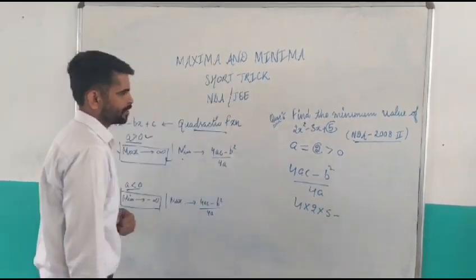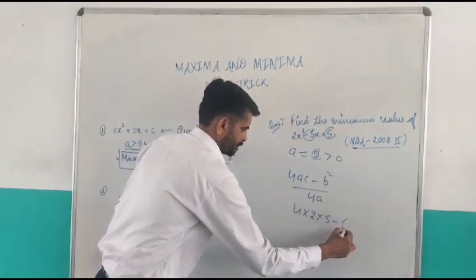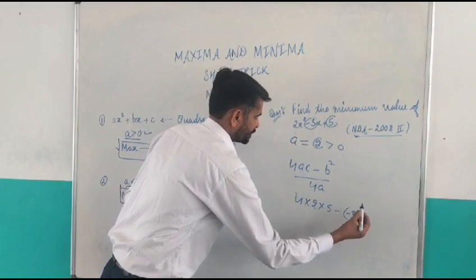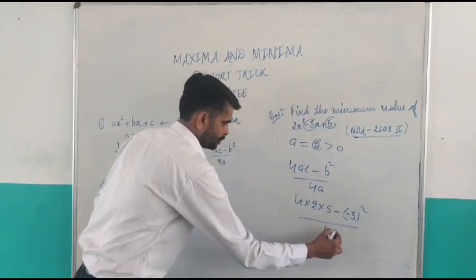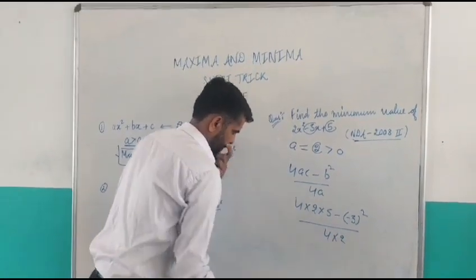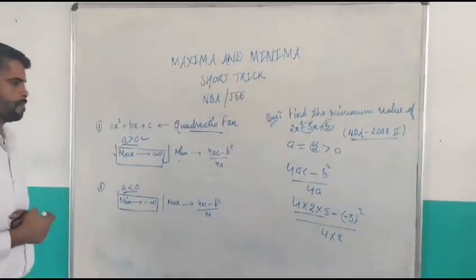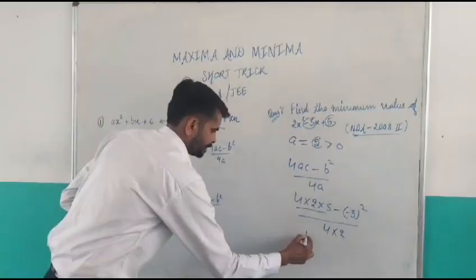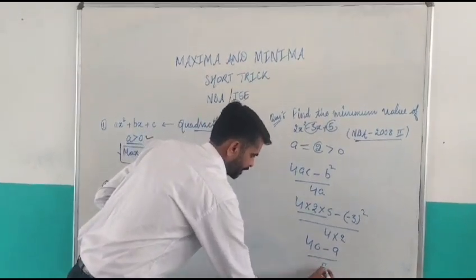Minus B squared. B is minus 3, so square of minus 3 divided by 4A. Here A is 2, then this will become 8 times 5, 40.